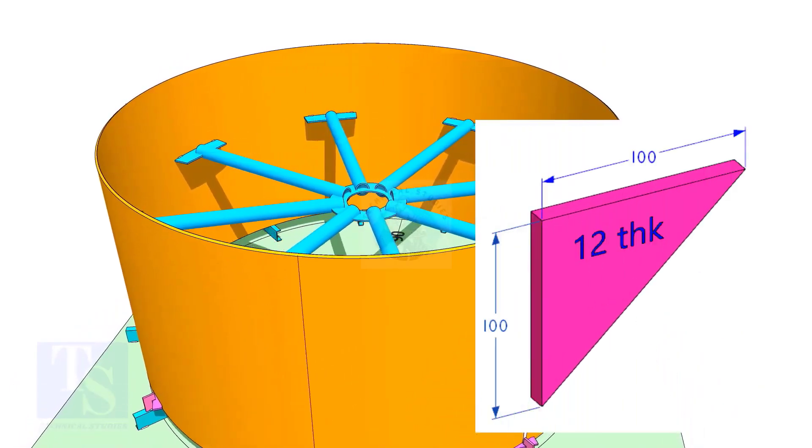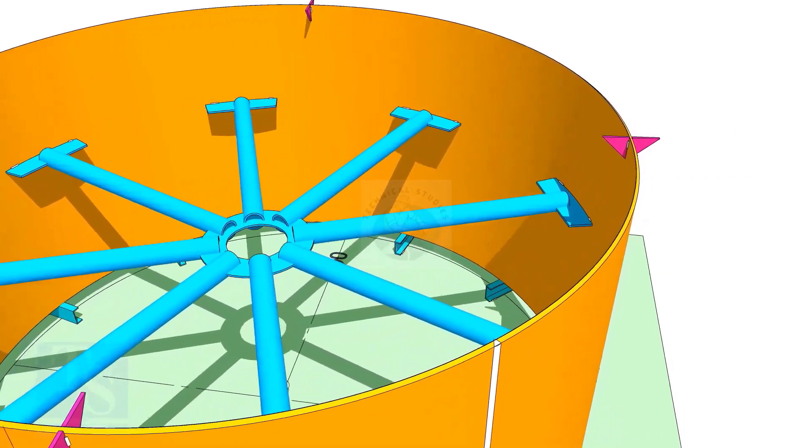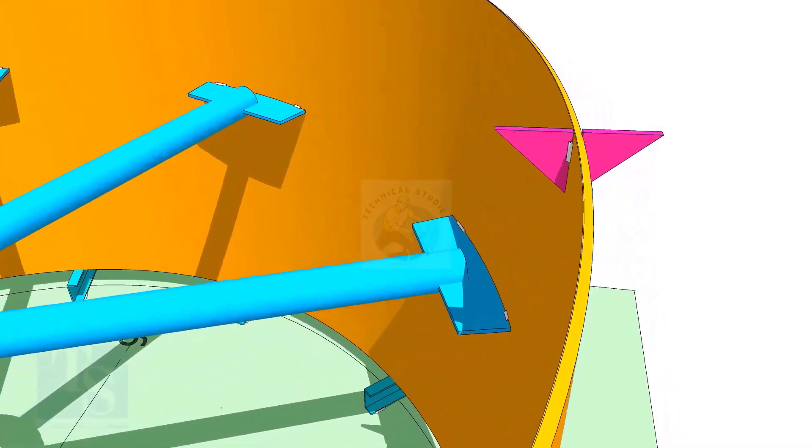Tack weld these brackets inside and outside the shell at least at four locations, 90 degrees apart. This will stop the top shell from falling down.